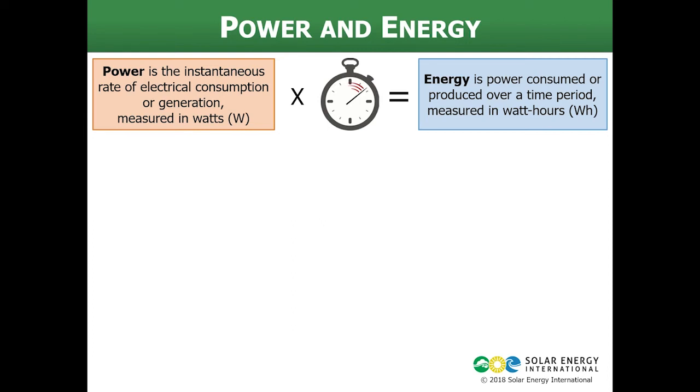Now let's look at a couple examples of power and energy. Here's our traditional 75 watt incandescent light bulb. When you turn this light bulb on, it's drawing 75 watts, so that's the power. If we use that light bulb for five hours, we consume 375 watt-hours. So that's the amount of energy that's consumed by this 75 watt light bulb over five hours.